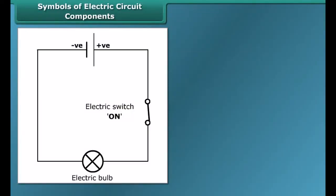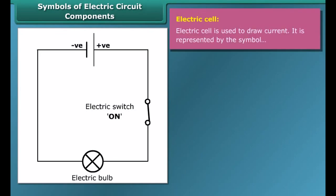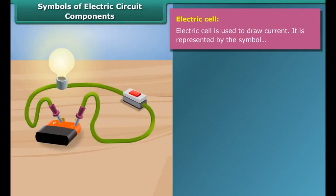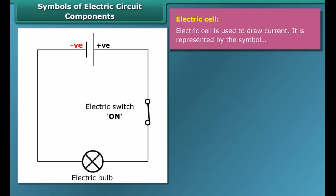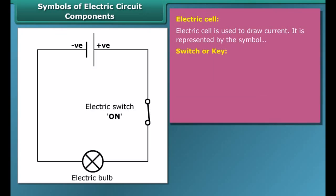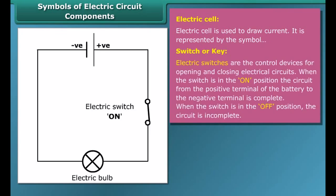An electric cell is a simple device which is used to generate electricity. Electricity is produced by chemical reaction. It has a positive terminal and a negative terminal. In the symbol of the electric cell, the longer line represents the positive terminal and the thicker shorter line represents the negative terminal.